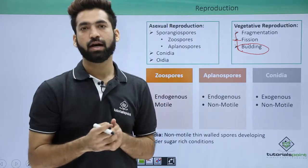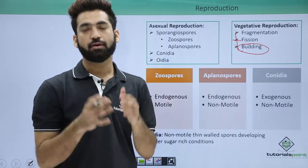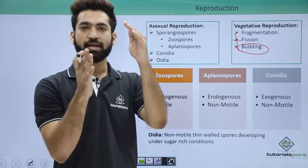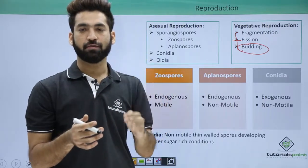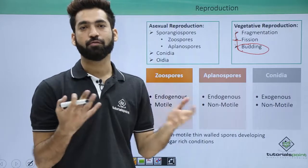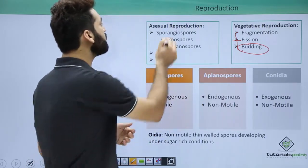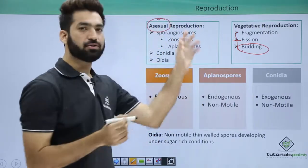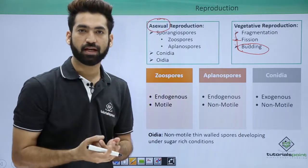When you talk about fragmentation, it occurs in mycelia — mycelia means multicellular hyphae. The multicellular organism divides into fragments, and each of these fragments develops into a new fungus.